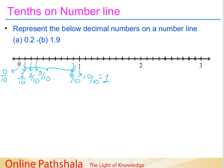Now, if I have to represent the number 0.2, how can we convert this into a fraction? This will be converted as 0 plus 2 by 10. That means it is after 0 for 2 parts. So 0.2 is represented here at the second part.